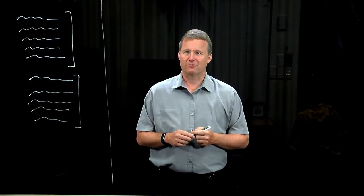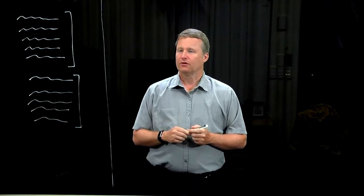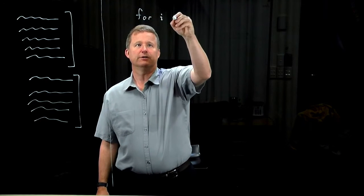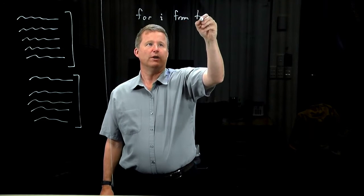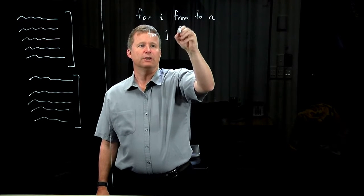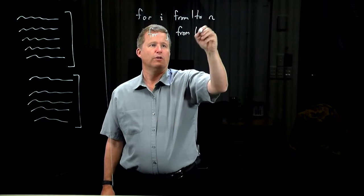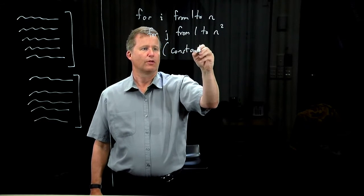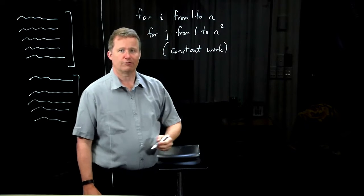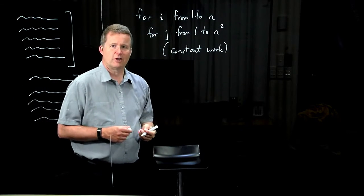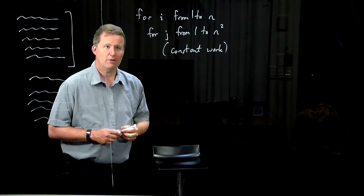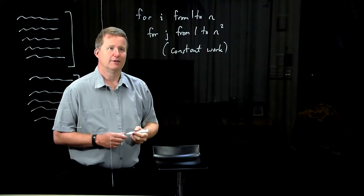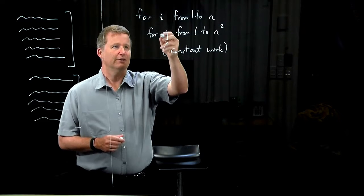Now, of course, most programs have more interesting control flow. For example, they have things like loops. Let's imagine we have something like this. For i from 1 to n, just some pseudocode, no particular language, j from 1 to n squared. And then we do some constant amount of work every time we go through. What's the running time of this code fragment going to be? How many times does the constant amount of work get done? How many pairs i and j are there in these loops?